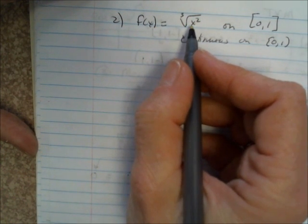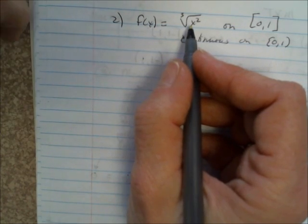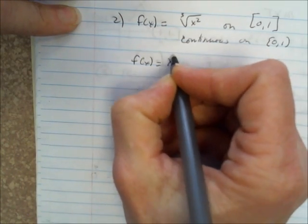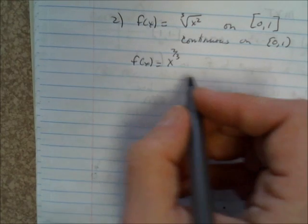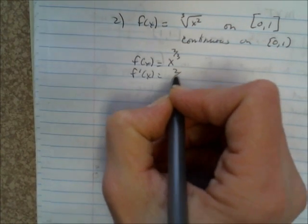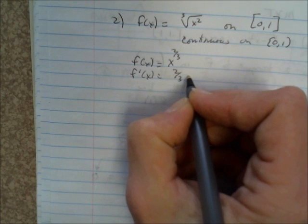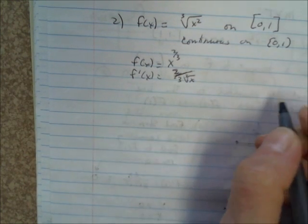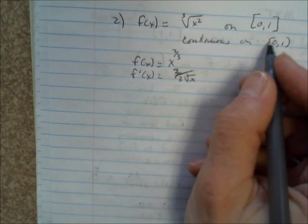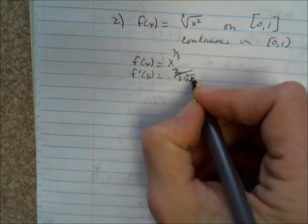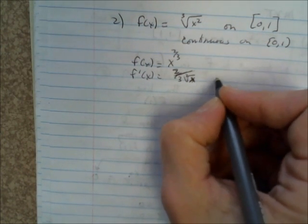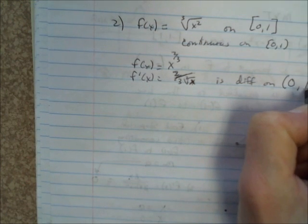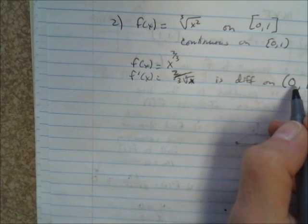Is this differentiable? Let's rewrite this. f(x) equals x to the 2/3 power. So f'(x) equals 2/3 x to the negative 1/3, which is the cubed root of x in the denominator. So 2 over 3 cubed root of x. Is this differentiable on the open interval? The only place it would not be differentiable is x equals 0. But this is differentiable on the open interval between 0 and 1 because 0 is not included in this open interval.